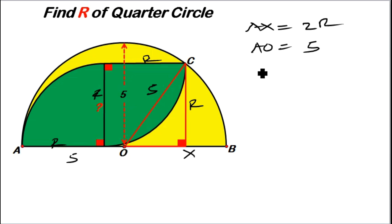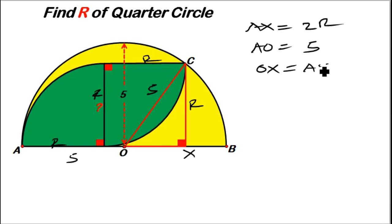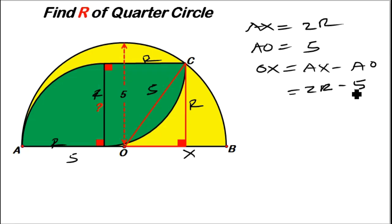So what about O to X? To get the length from O to X, it means it is AX minus AO. So OX is going to be 2r minus 5, because AX is 2r and AO is 5. So from O to X is 2r minus 5.